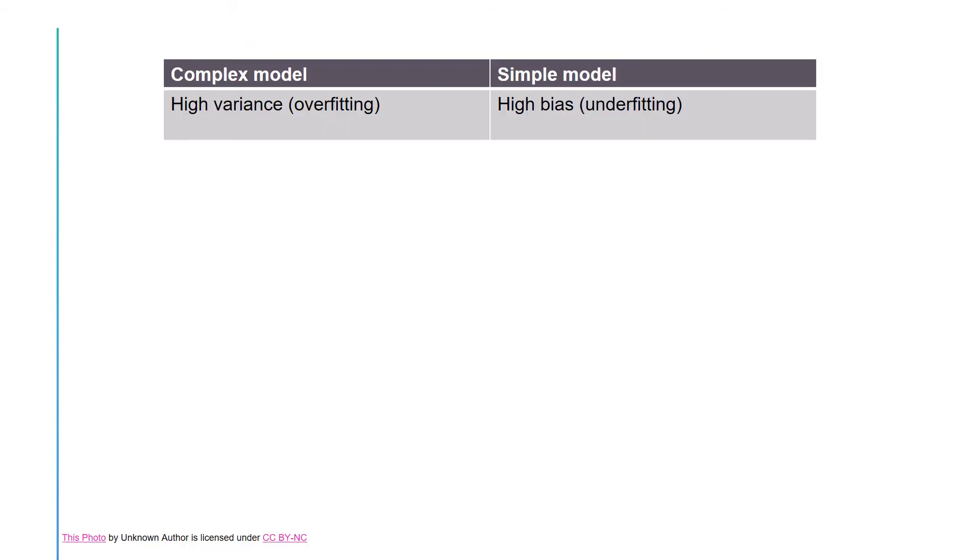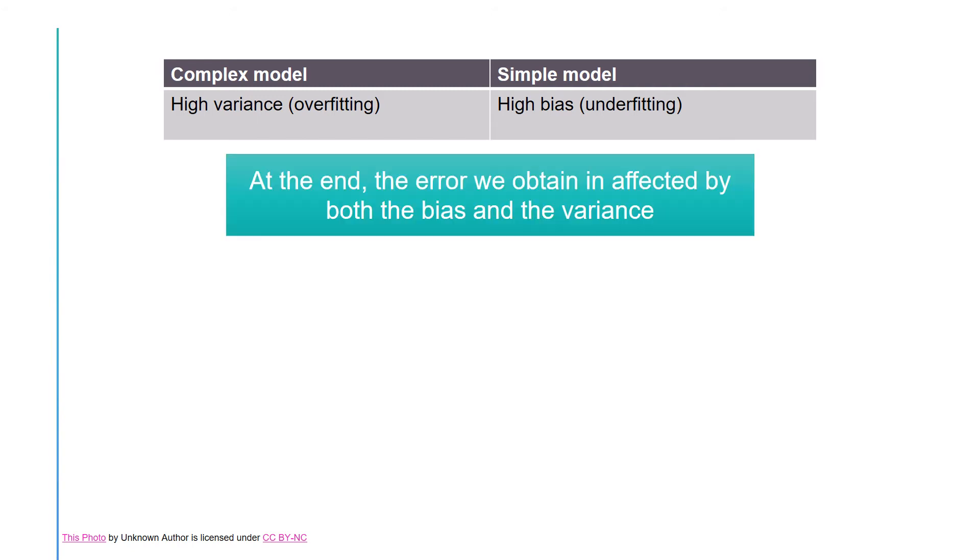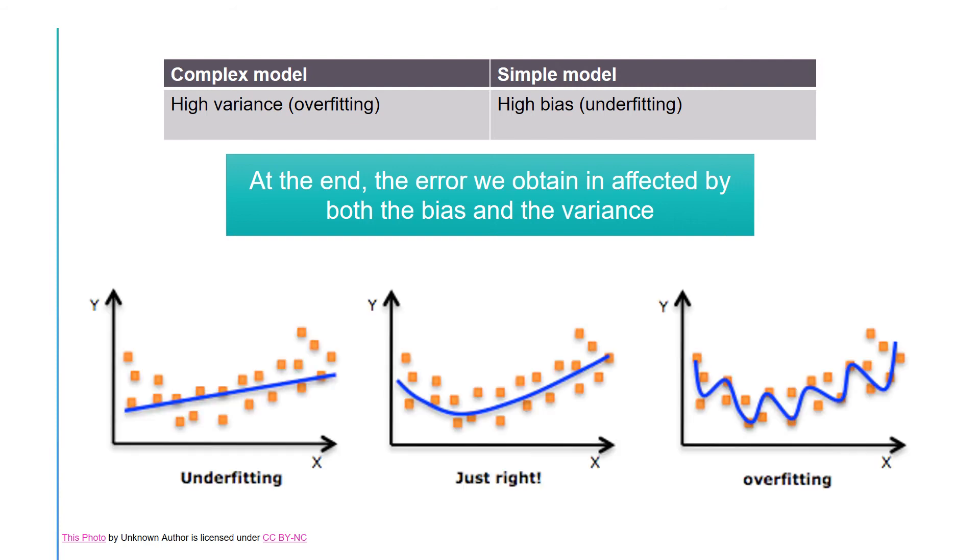In summary, complex models usually have high variance while simple models usually have high bias. At the end, the performance is affected by both variance and bias, so we need to find a sweet spot that prevents our model from overfitting and underfitting.